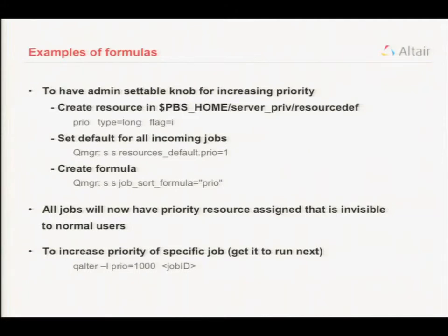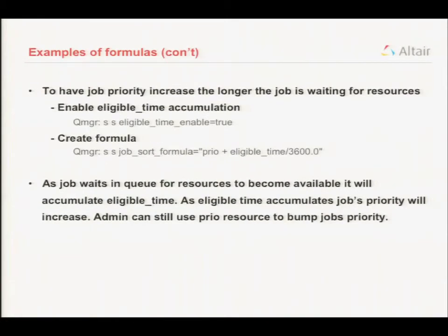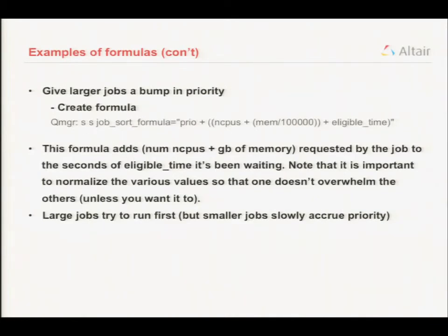There's a server attribute called eligible_time_enable that will accumulate as a job sits waiting for resources. This is how you would basically replace starving — over time the eligible value of a job will increase; the longer it sits, the larger it gets, and the higher the priority. You can see I've normalized it to hours as opposed to seconds for eligible time, and I've included the admin priority so that an admin can still increase the priority of a job by setting that 'prio'.